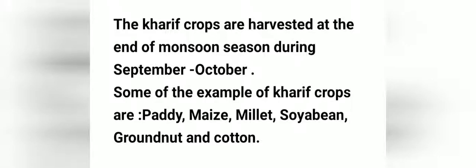Waise fasal jin ko baarish ke mausam mein boya jata hai unhe Kharif ki fasal kehte hain. India mein rainy season June se shuru hote hain aur September tak khatm hote hain. Kharif crops are harvested during September-October.